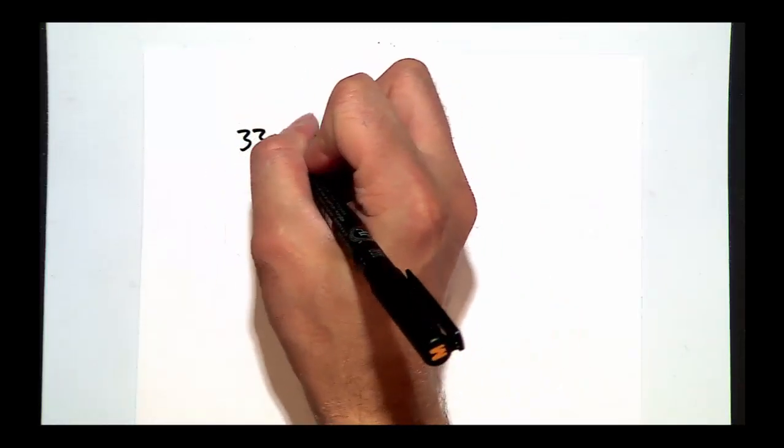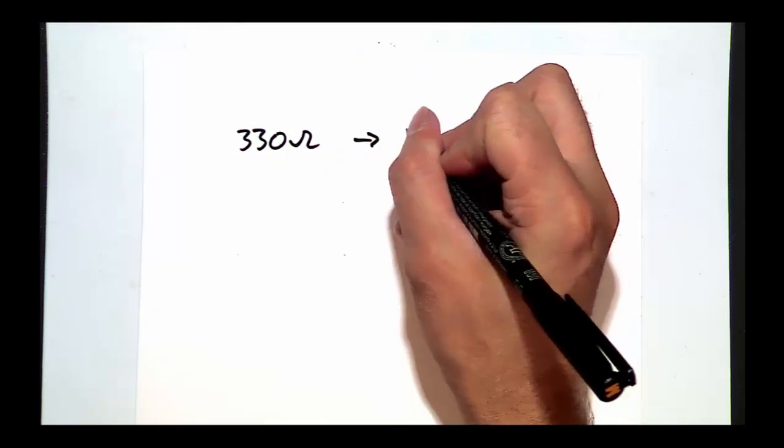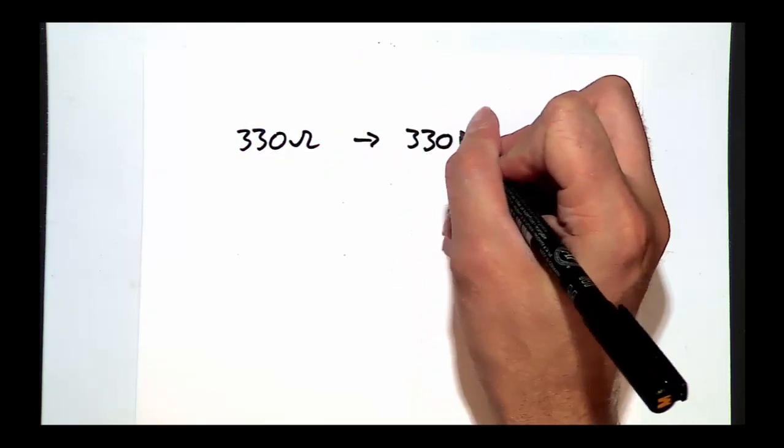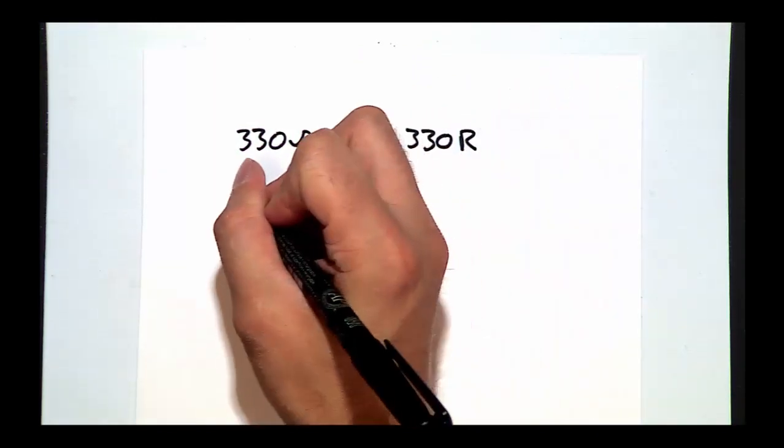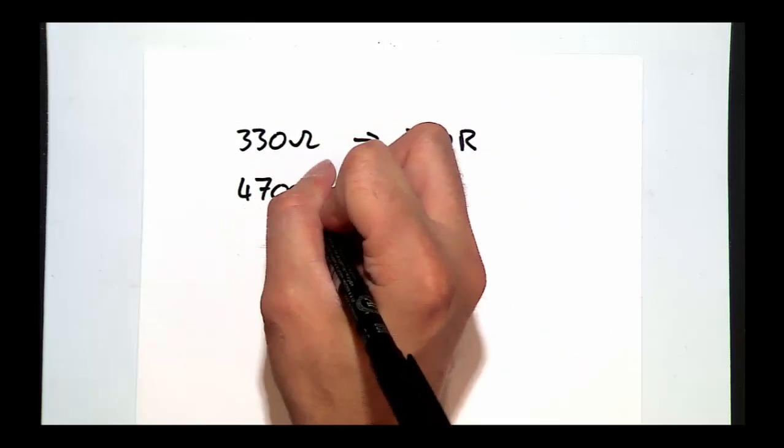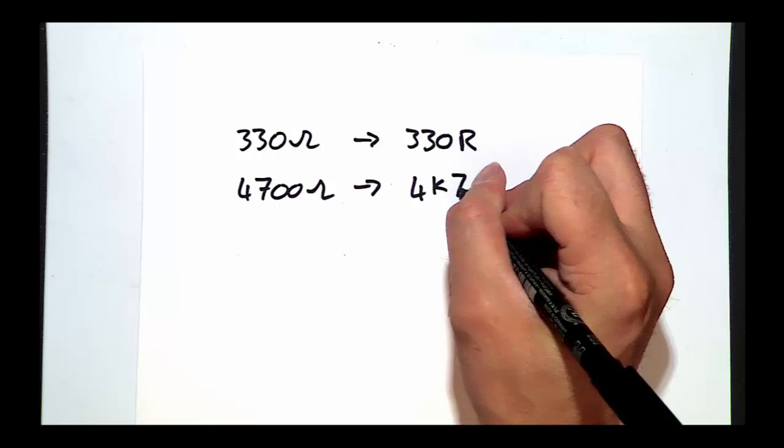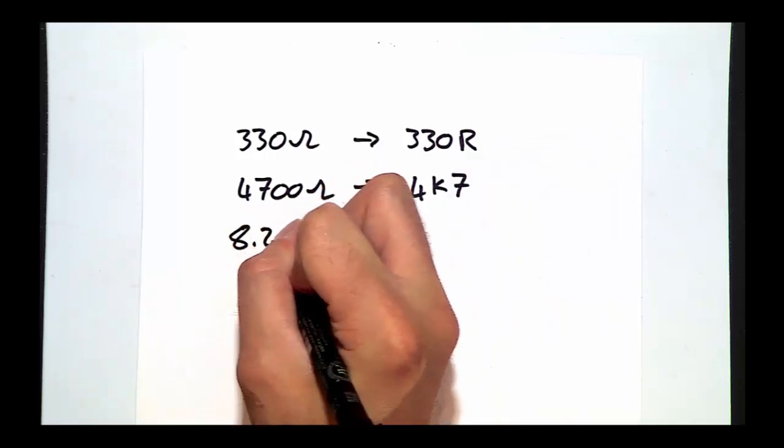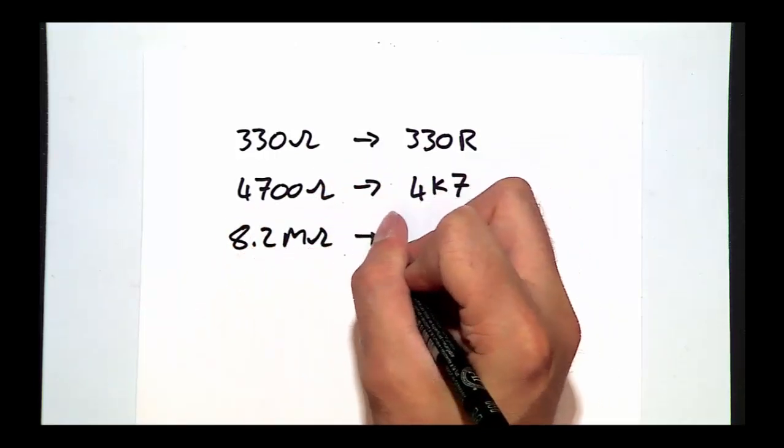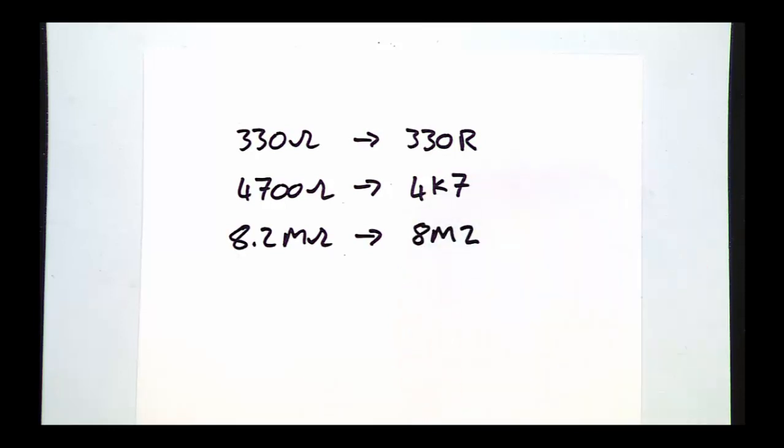For example, a 330 ohm resistor would be written as 330R. A 4700 ohm resistor would be written as 4K7. And an 8.2 mega ohm resistor would be written as 8M2.